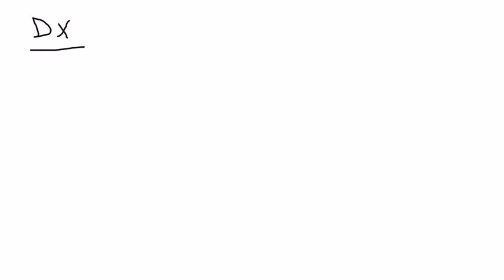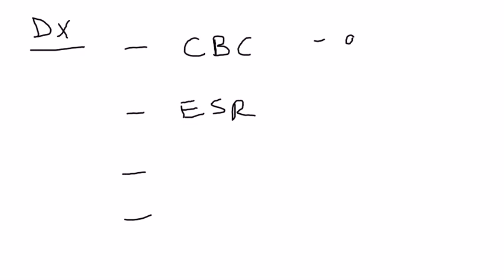So somebody has the symptoms and some pretty characteristic physical exam findings. What are the diagnostic tests? There are four main ones. The first couple are very basic: CBC and ESR. With CBC you're looking for anemia — these are nonspecific tests but always ordered in a diagnostic workup of endocarditis. ESR is erythrocyte sedimentation rate, a nonspecific indicator of inflammation, and it will be elevated since endocarditis is inflammation.